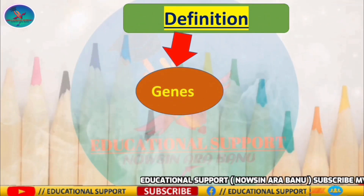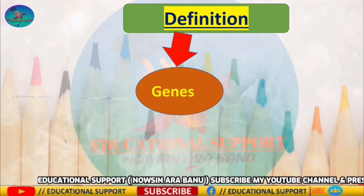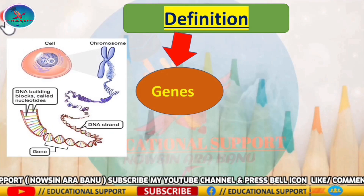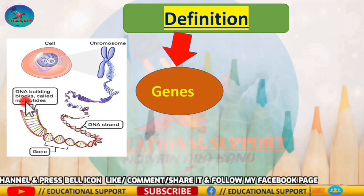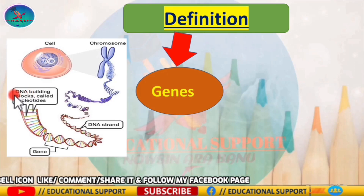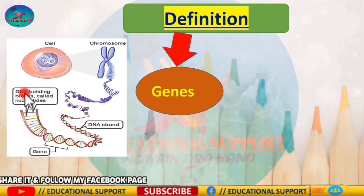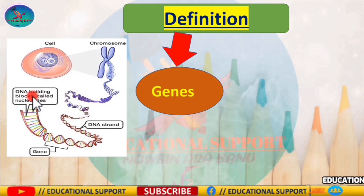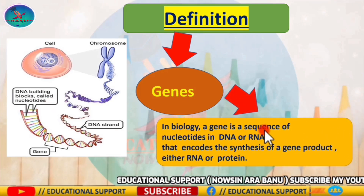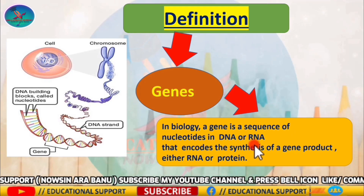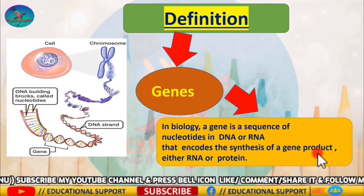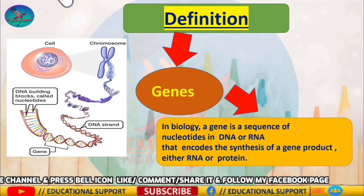What are genes? A gene is a string of nitrogen bases that indicates the manner by which proteins are made. Proteins are made up of strings of amino acids. They function as enzymes, organic catalysts, and as structural building blocks of cells. In biology, a gene is a sequence of nucleotides in DNA or RNA that encodes the synthesis of a gene product, either RNA or protein.